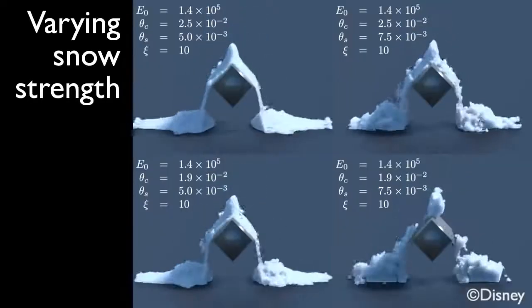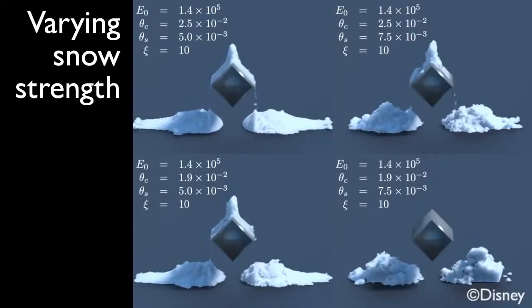By varying our model's parameters, we can produce different types of snow. For instance, changing the snow strength parameters lets us choose between powdery and chunky snow.